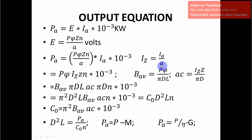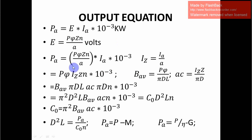We know the total current per conductor I_Z equals I_A divided by A, so we can replace I_A by A times I_Z. After substitution, the power equation becomes P·φ·I_Z·Z·n times 10 to the power minus 3. The power developed equation has been modified after substitution of these two relationships.